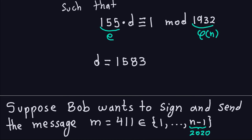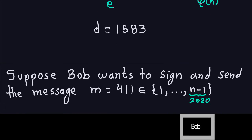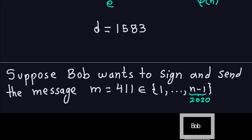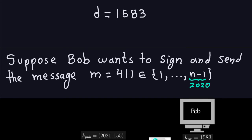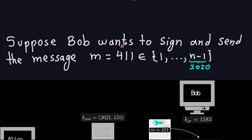So the setup is complete: the public key is (n=2021, E=155) and the private key is d=1583. Now, Bob wants to send a signed message m = 411. It's important that the message is between 1 and n−1; since n = 2021, n−1 = 2020, and 411 satisfies that condition. So 411 is a valid message.